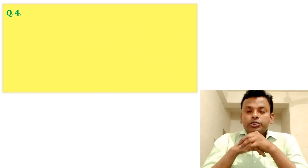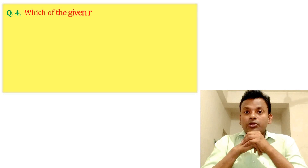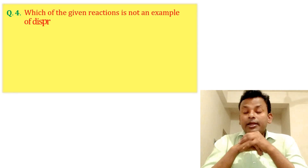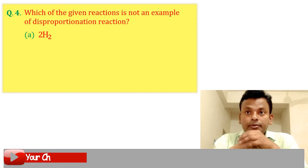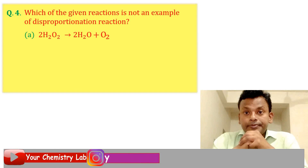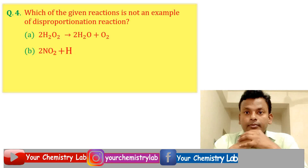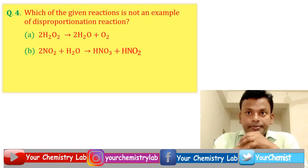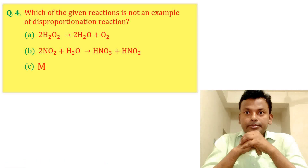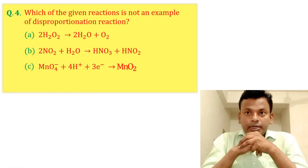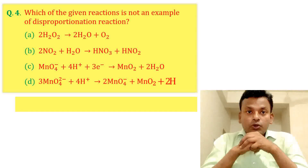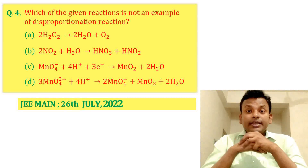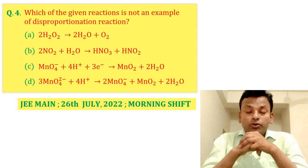Question four: Which of the given reactions is not an example of a disproportionation reaction? Options are option A, option B, option C, and option D. This question was set in JEE Main 26th July 2022 morning set.